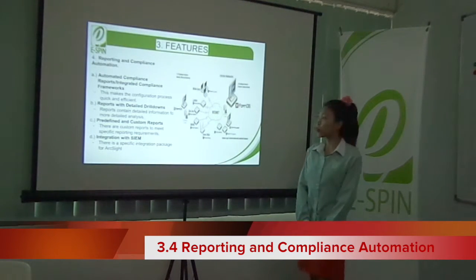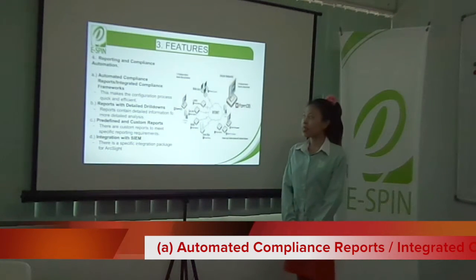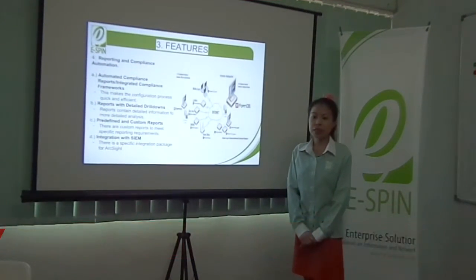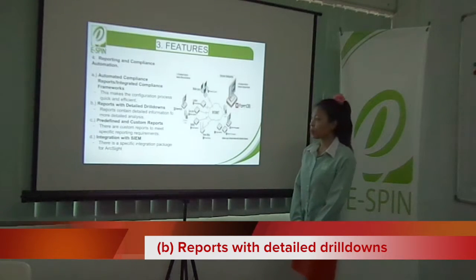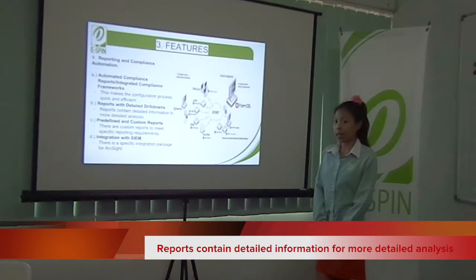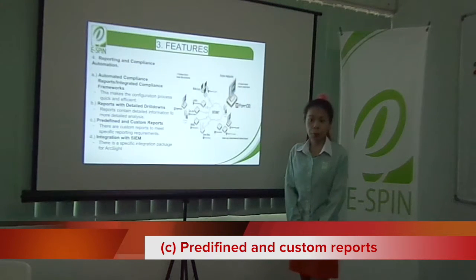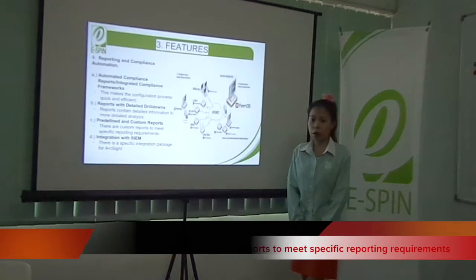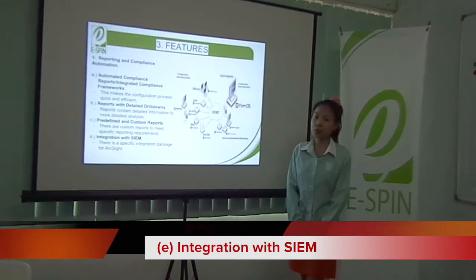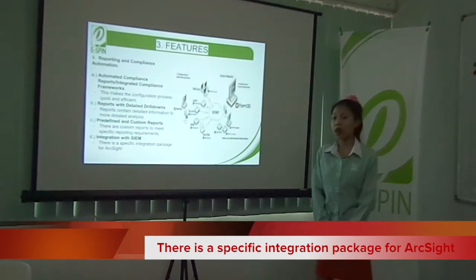There are four topics under Reporting and Compliance Automation. First is Automated Compliance Reports — this makes the configuration process quick and efficient. Second is Reports with Detailed Drill-Downs — reports contain detailed information for more detailed analysis. Third is Predefined and Custom Reports — there are custom reports to meet specific reporting requirements. Lastly, Integration with SIEM — there is a specific integration package for AppSense.